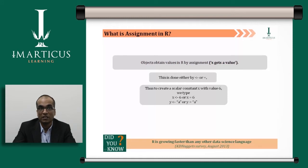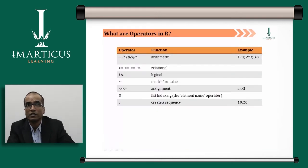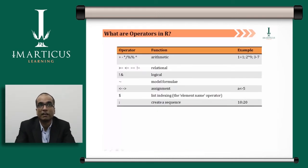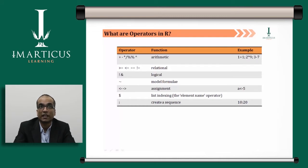Similarly, if you use the assignment operator with a character like 'a' in double quotes, that means you are allocating a character to Y, so the value stored in Y would be 'a'. The basic arithmetic operators in R are: plus (+), minus (-), asterisk (*) for multiplication, double percent (%%) for modulo, and the caret (^) for exponentiation.